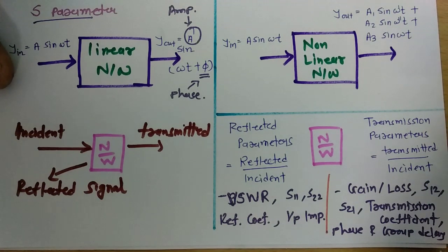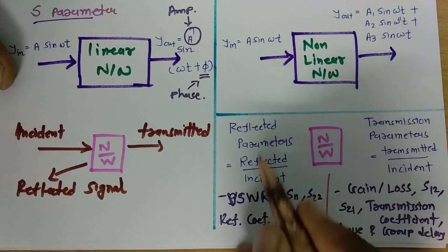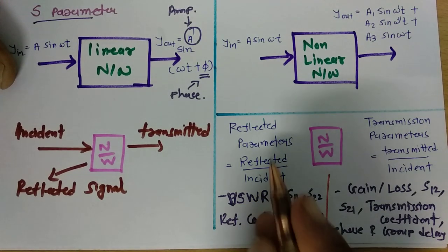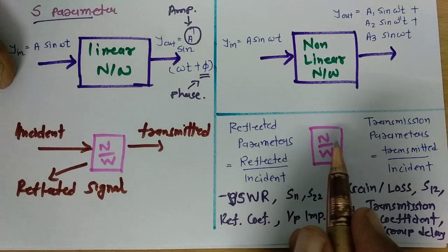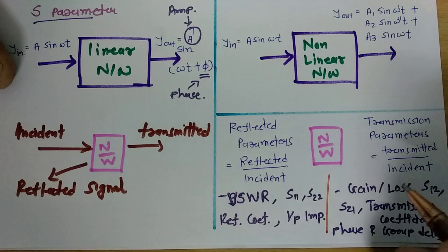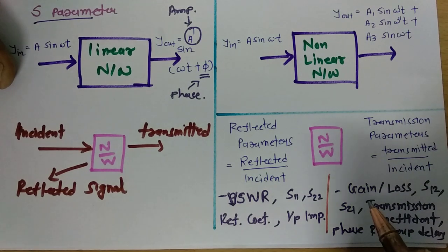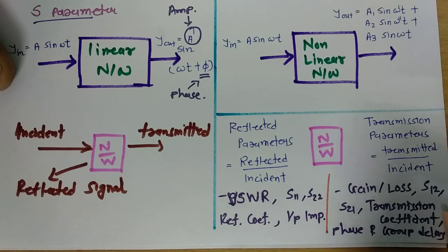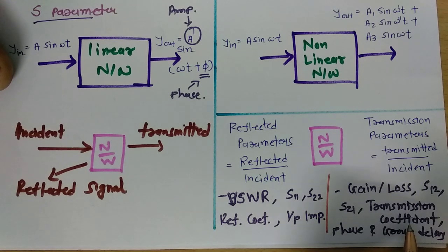In terms of reflected parameters, we measure VSWR, S11, S22, reflection coefficient, and input impedance — all reflected parameters for a linear network. For transmission parameters, we measure gain, S21 (transmission from port 1 to 2), S12 (transmission from port 2 to 1), transmission coefficient, phase, and group delay.